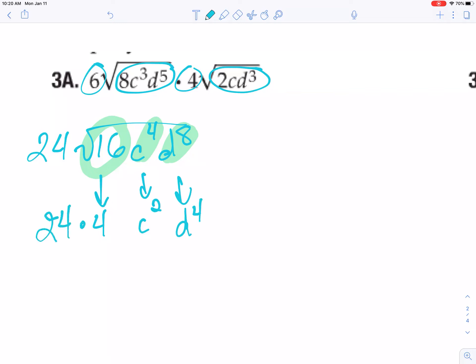All of this still times that 24. So I'm going to take 24 times 4 to get 96c squared d to the 4th.